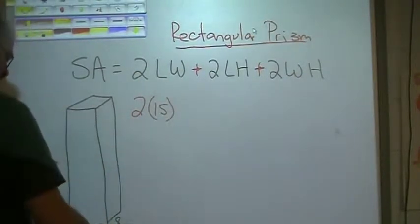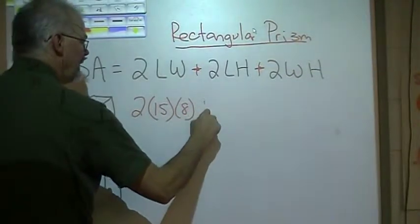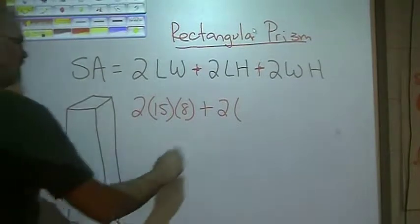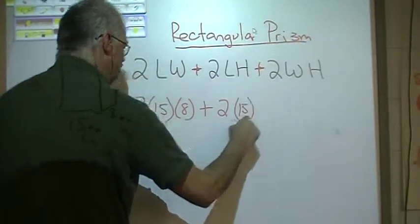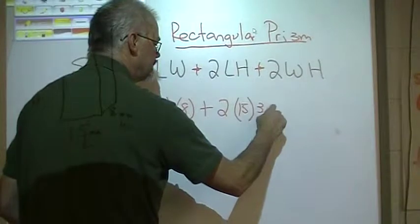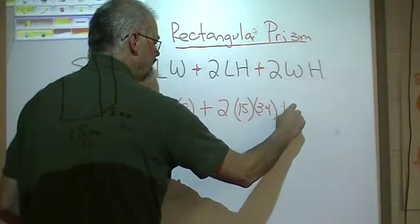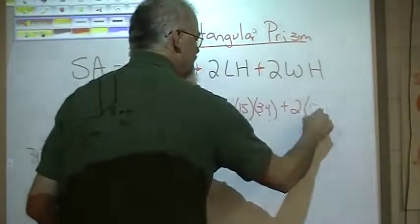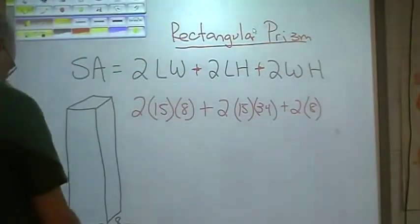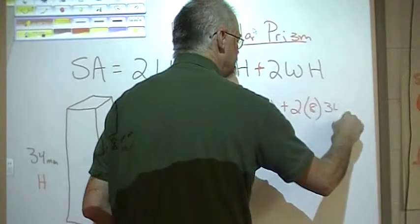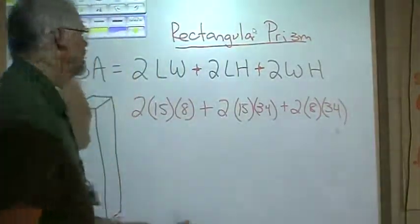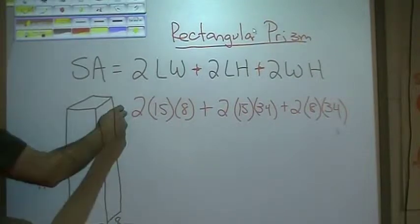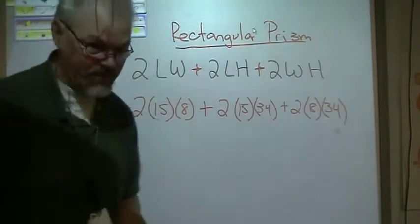Plug in your pieces. Here we go, let's do this thing. 2 times my length is 15 and my width is 8, plus 2 times my length is 15 and my height is 34, plus 2 times 8 and my height is 34.